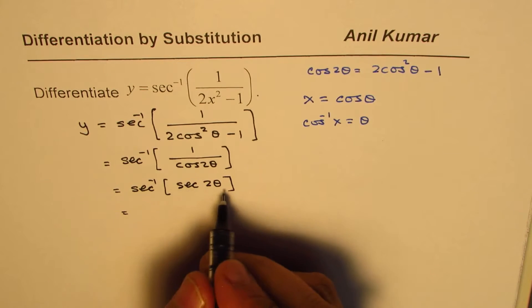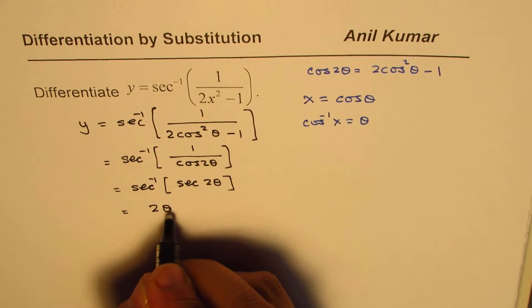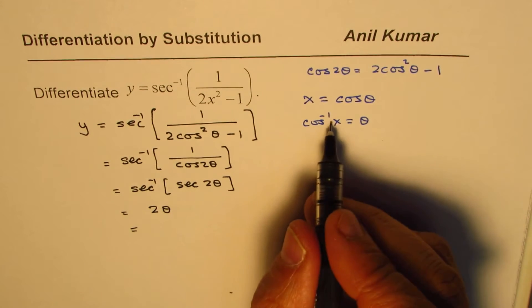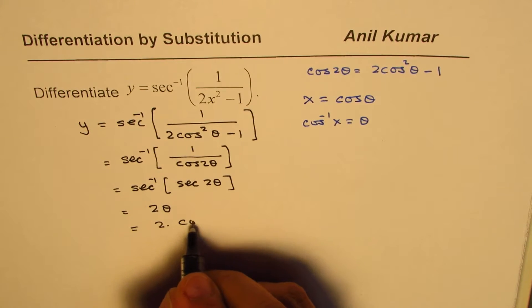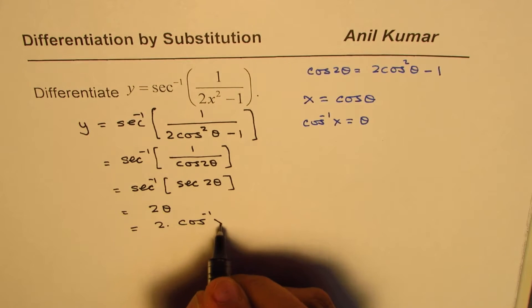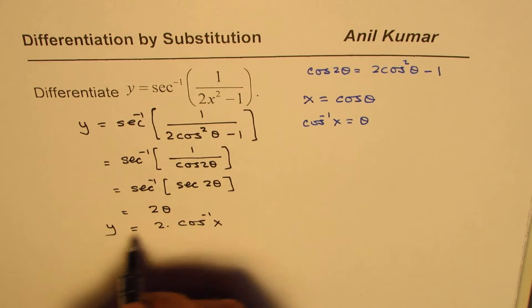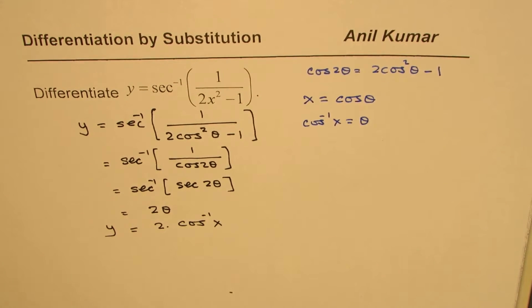Now, secant inverse of secant 2 theta is 2 theta. Theta is cos inverse x. So, we can write this as 2 times cos inverse x. So, we have y equals to 2 times cos inverse x.